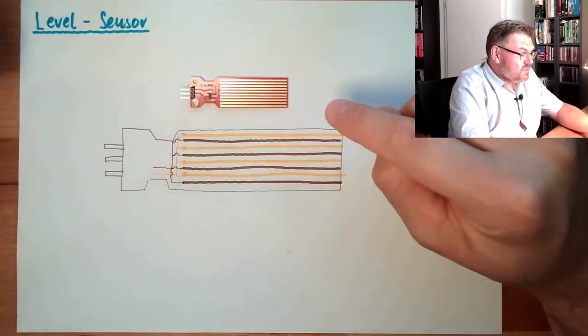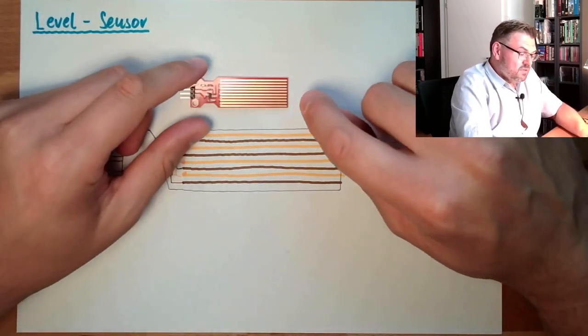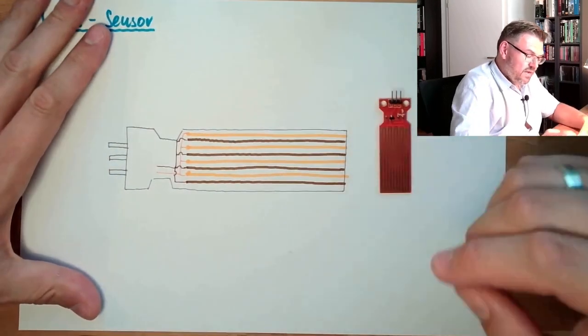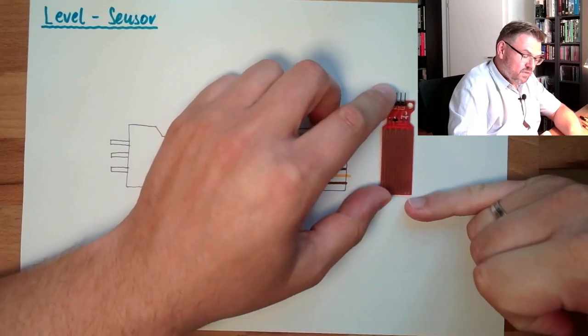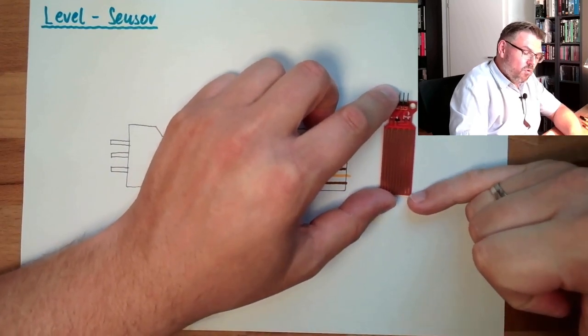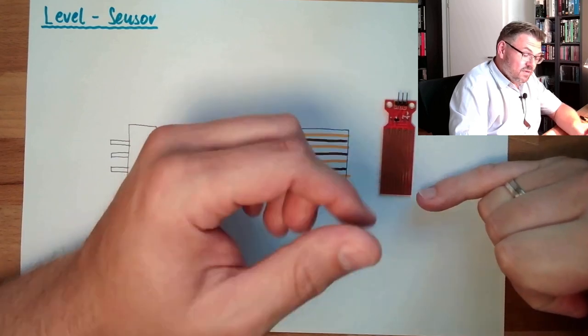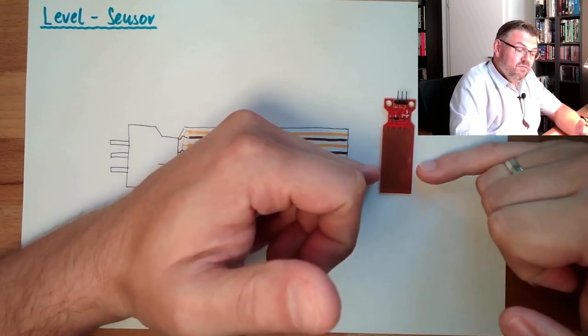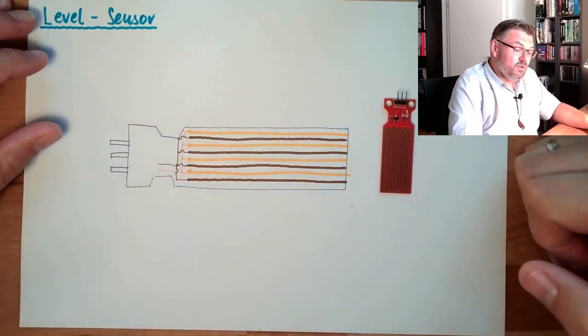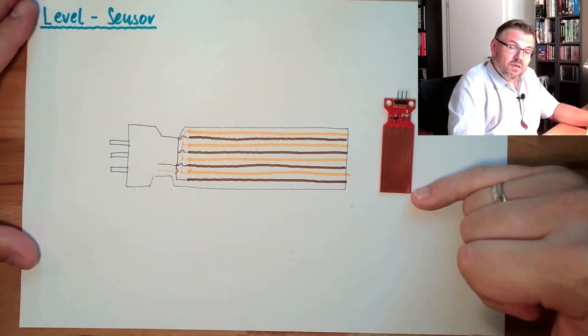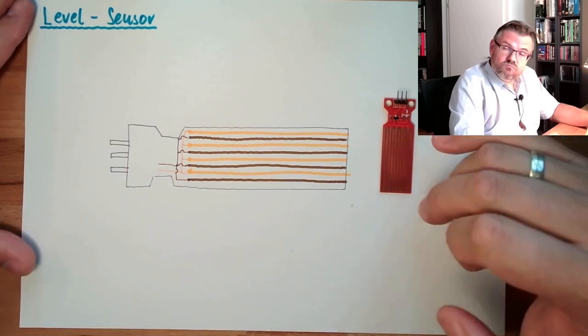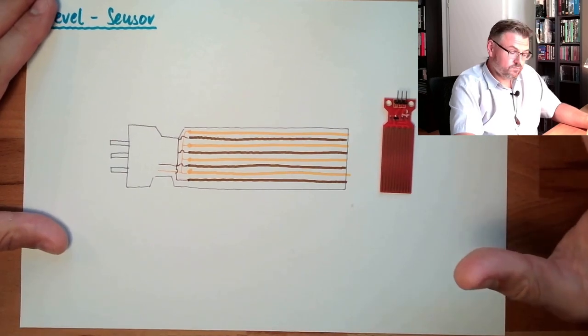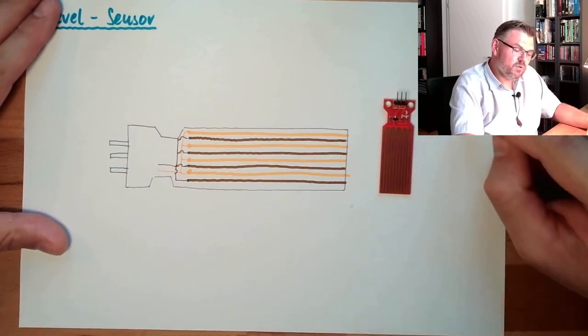This is why this is called a level sensor, because if we think about putting it like this in water or something like this, and the water is rising, then the more of the surface the water is touching, the better the conductivity between those two sides will be. So starting with nothing, going up to very good connectivity between the two sides. This is why this can be used as level sensor.